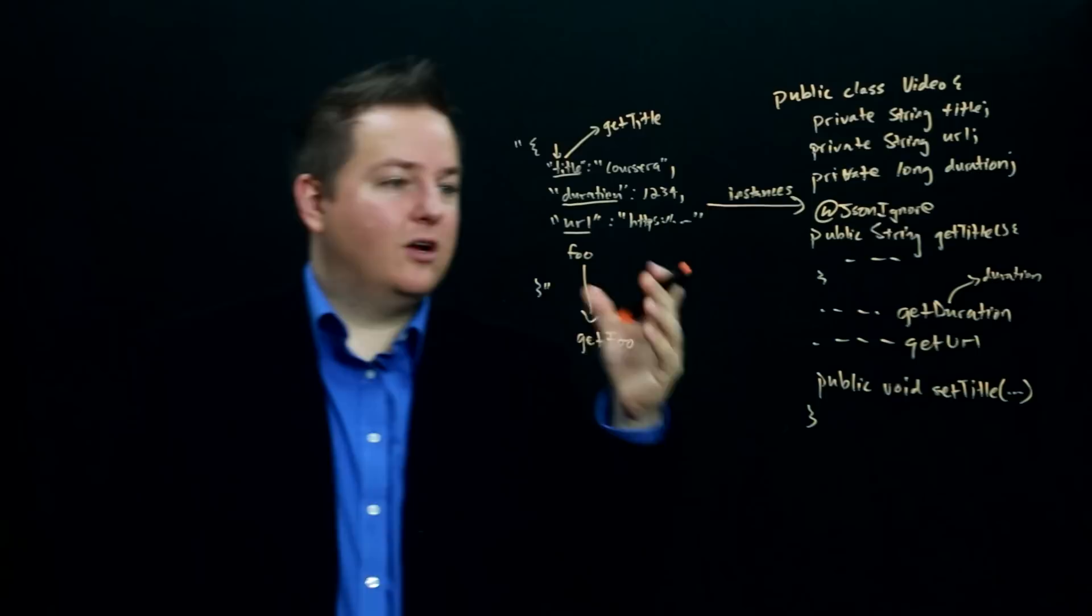So you can also use annotations within Jackson to control the naming of the JSON that gets produced or the JSON that gets consumed and mapped to your objects.